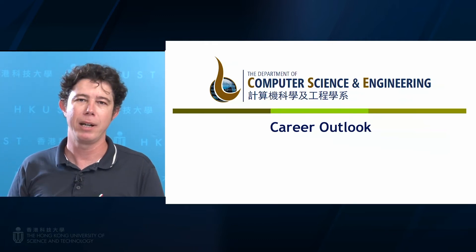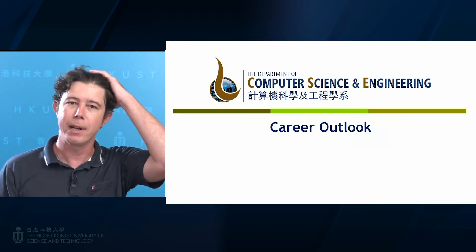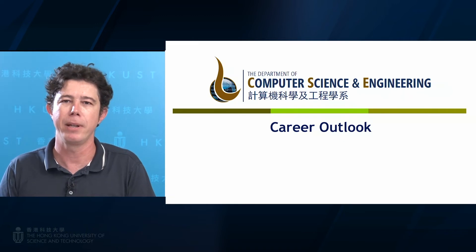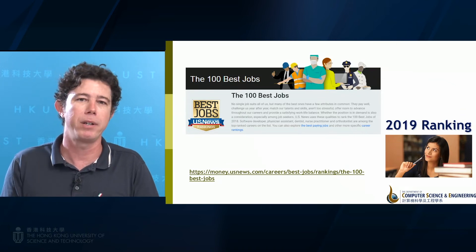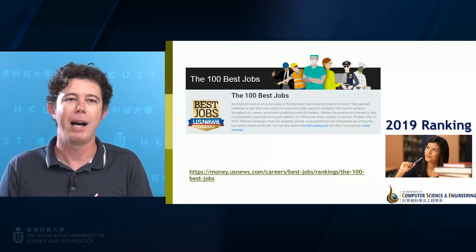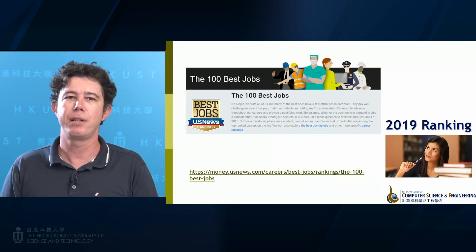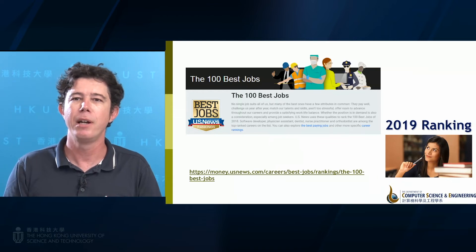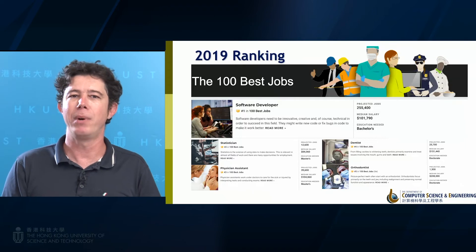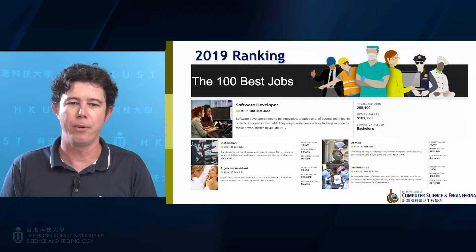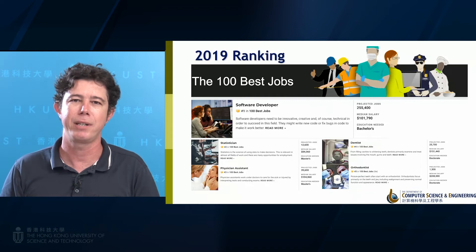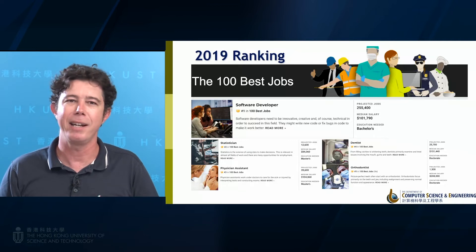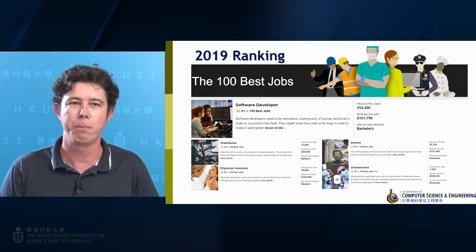Now I'll talk a little bit about the career outlook for people who choose computer science. There have been lots of surveys on what are the top and most interesting jobs in the market. US News regularly conducts this survey, and in 2019 they ranked software developer as the number one job for several different reasons — the type of work, lifestyle, interest, pay, and benefits. It's quite exciting and very highly ranked as a good profession in general.